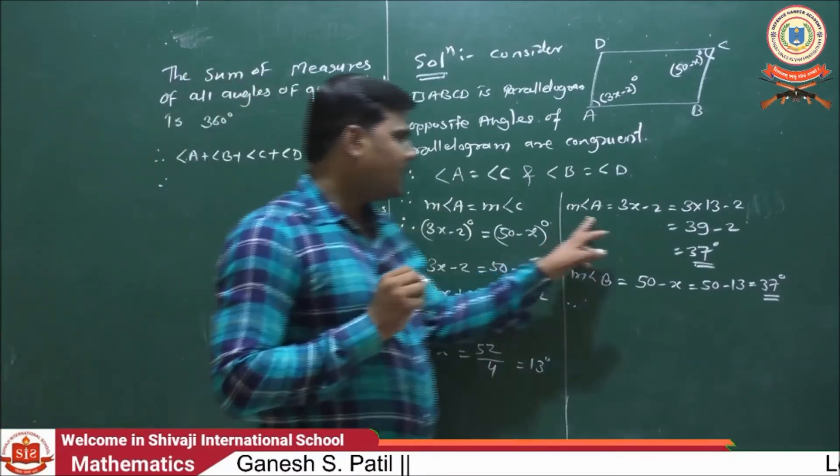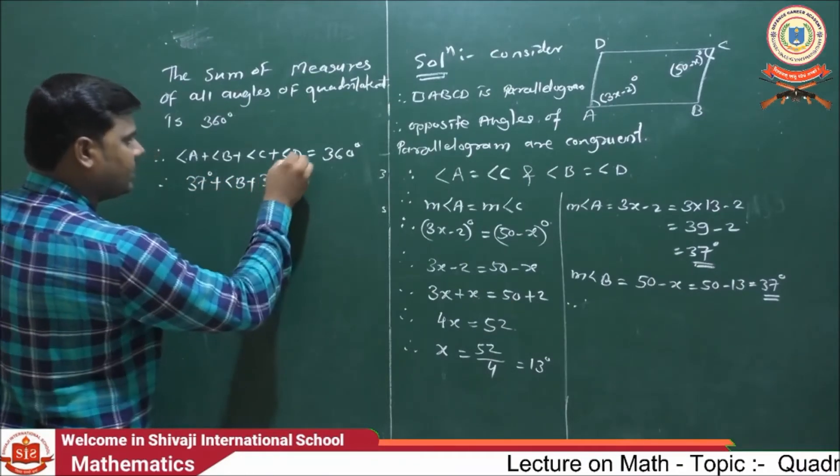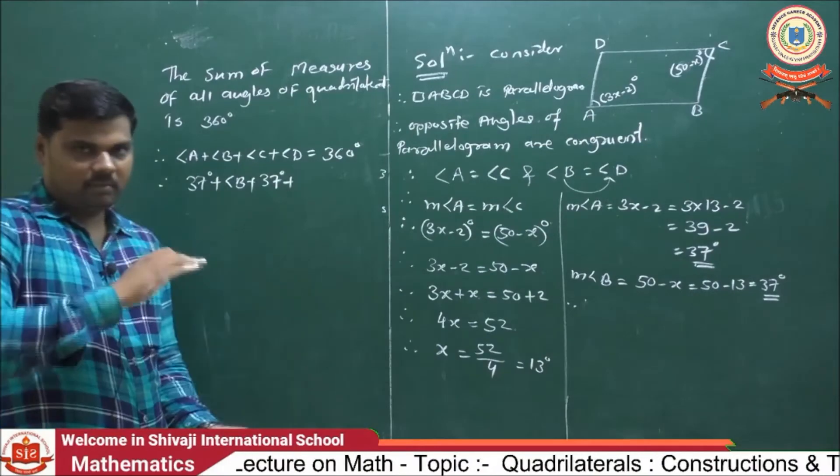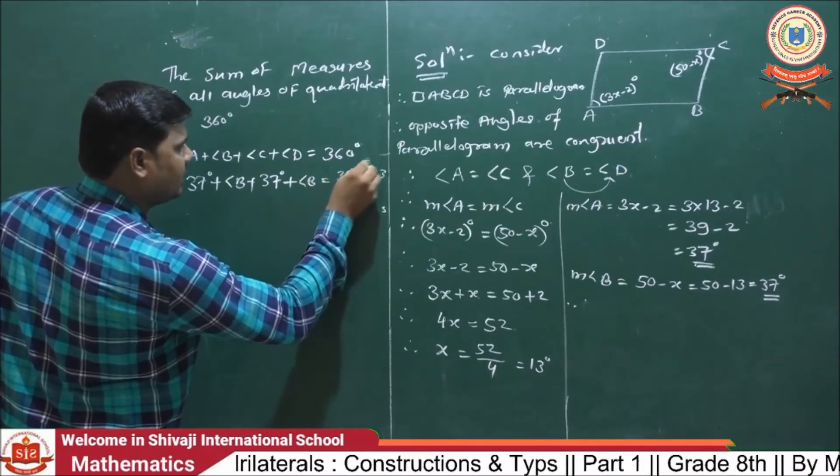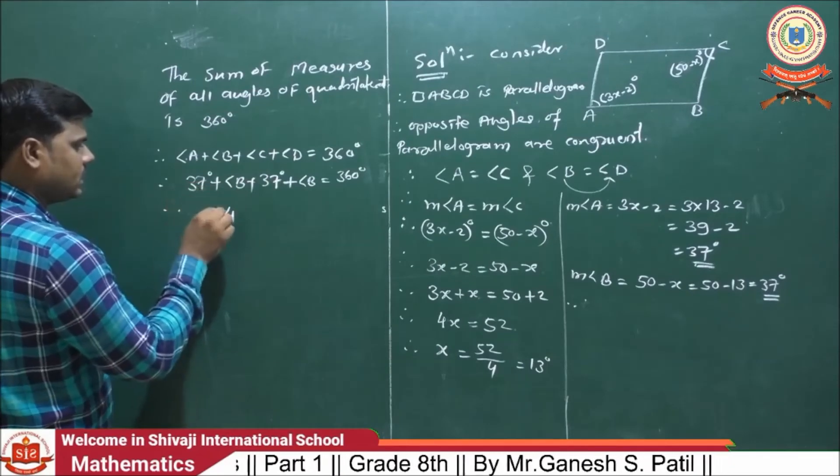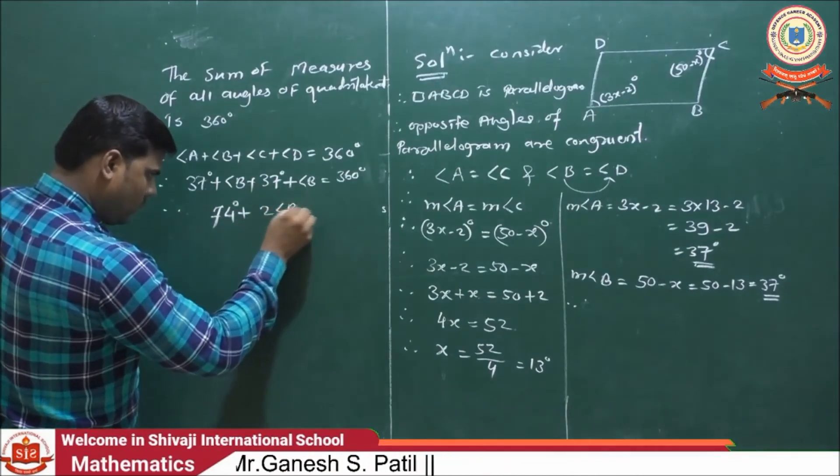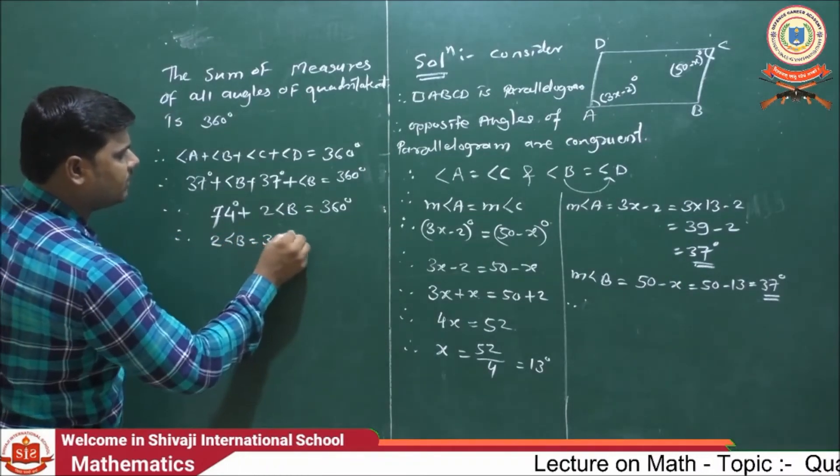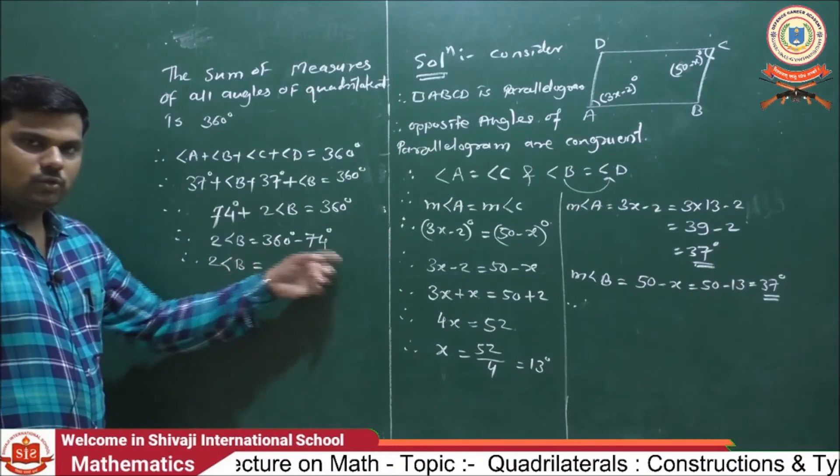We have the measure of angle A. Measure of angle A is 37 degrees. Then, write down B plus C is also 37 and D. We can interchange the value of D to B because these both angles are equal to each other. That's why I write here B. And this is 360 degrees. Then, 37 plus 37, 74 degrees. So, twice angle B is equal to 360 degrees minus 74. Then, twice B is equal to...